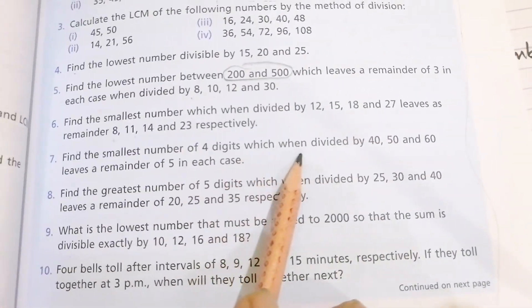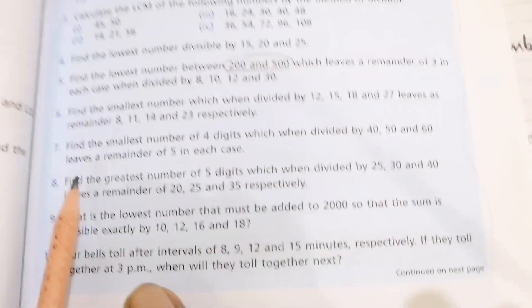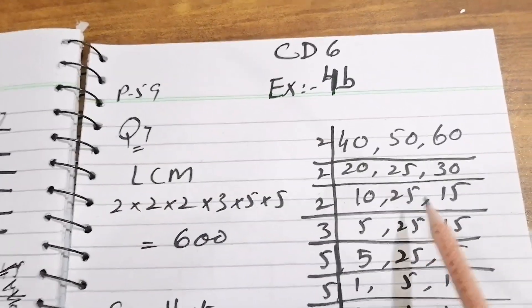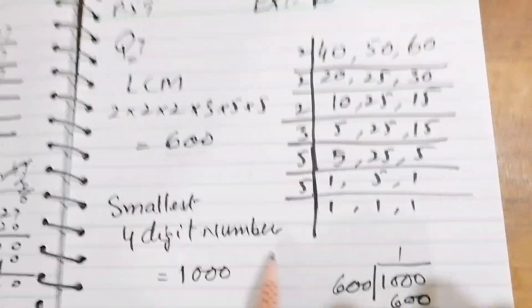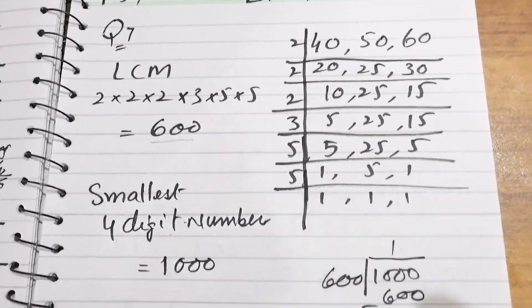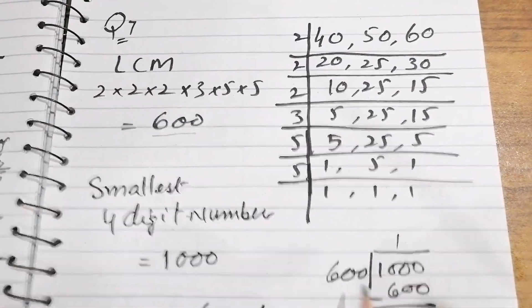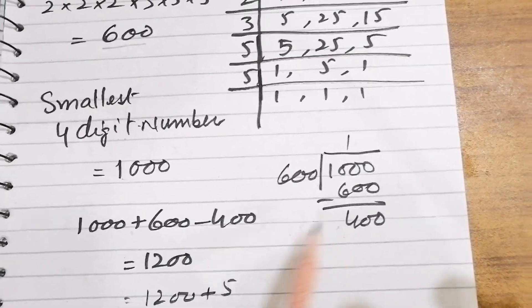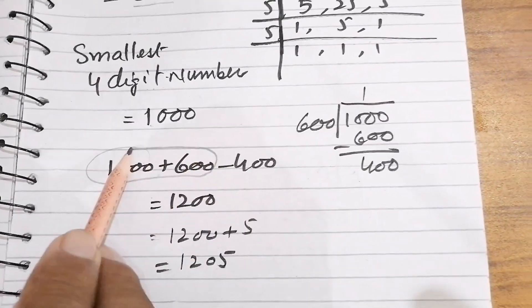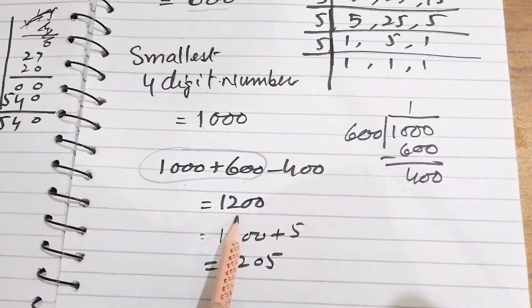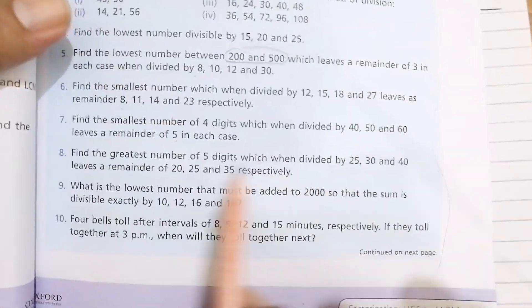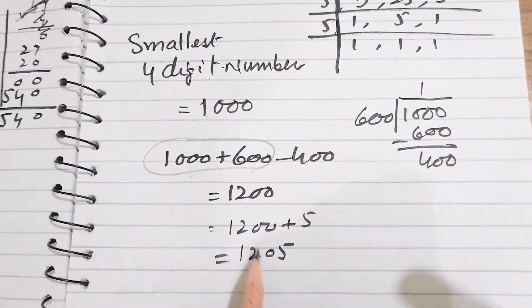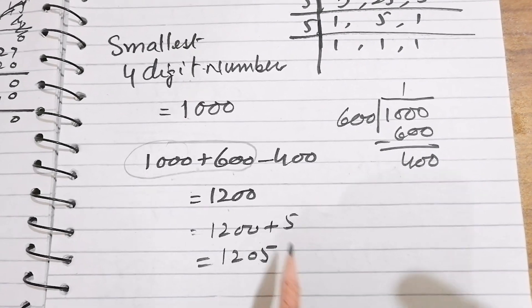Question 7: find the smallest 4-digit number which when divided by 40, 50, and 60 leaves a remainder of 5 in each case. LCM of 40, 50, 60 = 600. The smallest 4-digit number is 1000. Dividing 1000 by 600, remainder is 400. So we take 1000 + 600 − 400 = 1200, then add the remainder 5 to get 1205 as the required number.